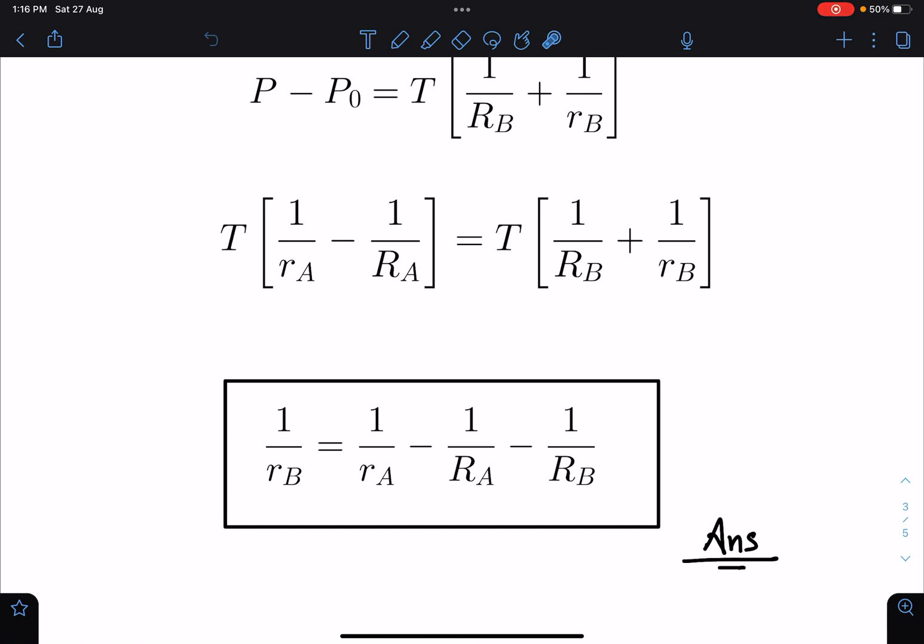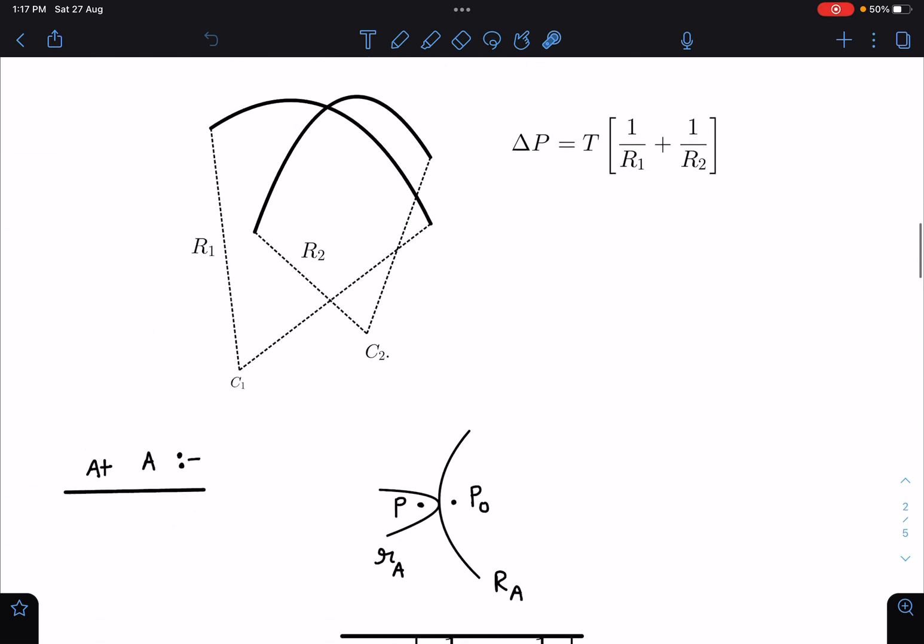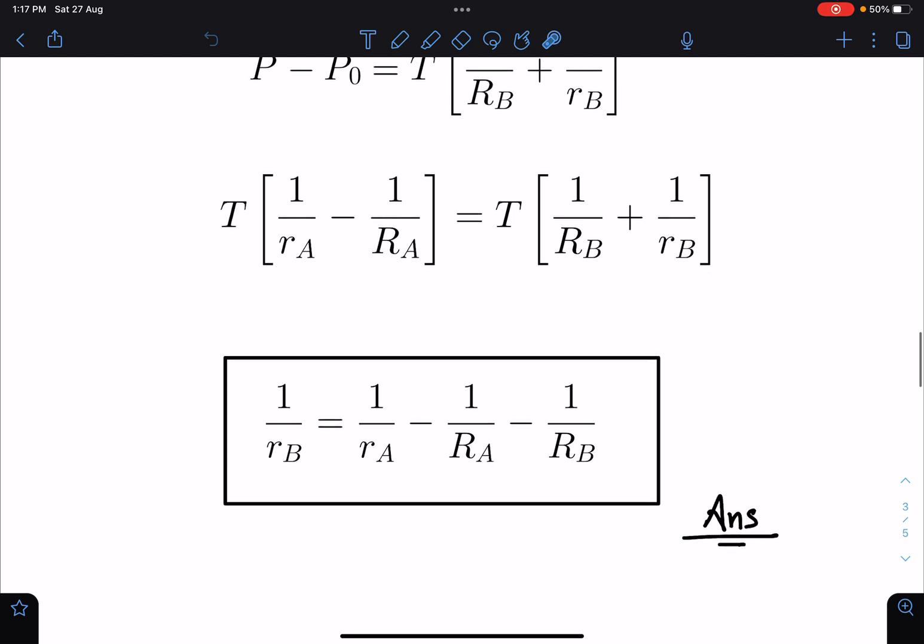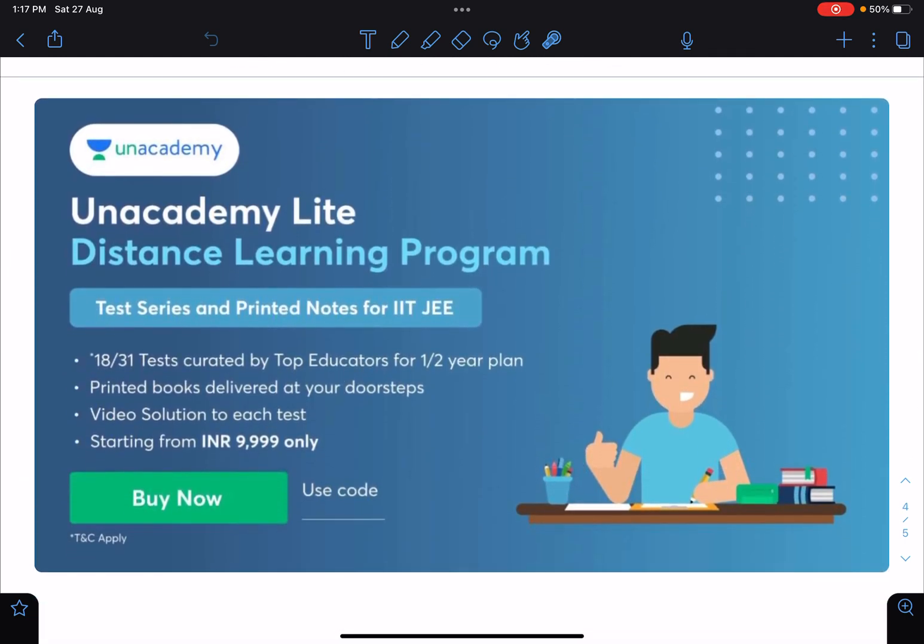It's an easy concept, and if people want, they can surely give this kind of problem. It's not very tough but slightly different. So guys, this is Unacademy Lite distance learning program. Here you can have test series and printed notes for IIT JEE. These tests are curated by top educators for a half-year plan, and the printed books will be delivered at your doorsteps. Video solution to each test will be given, and it will start from 999.